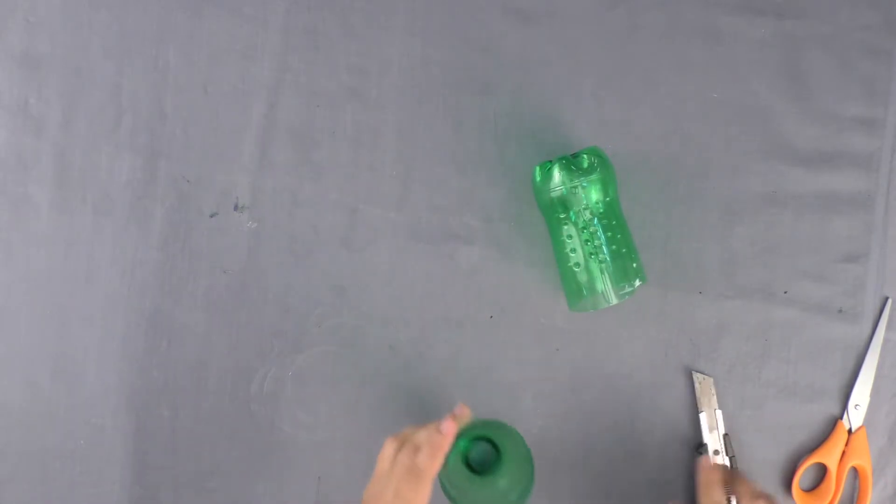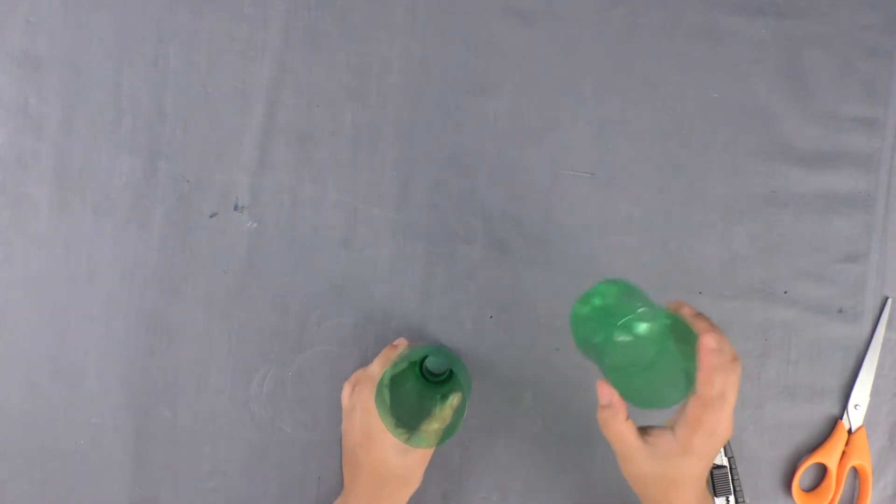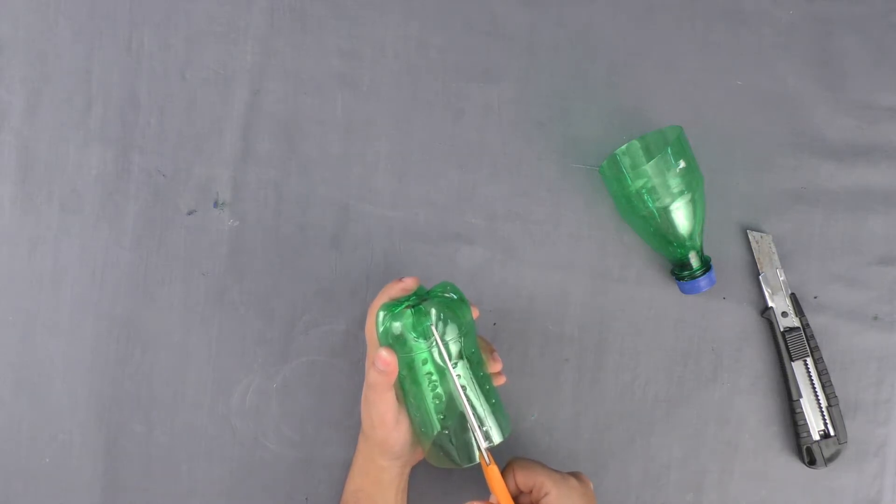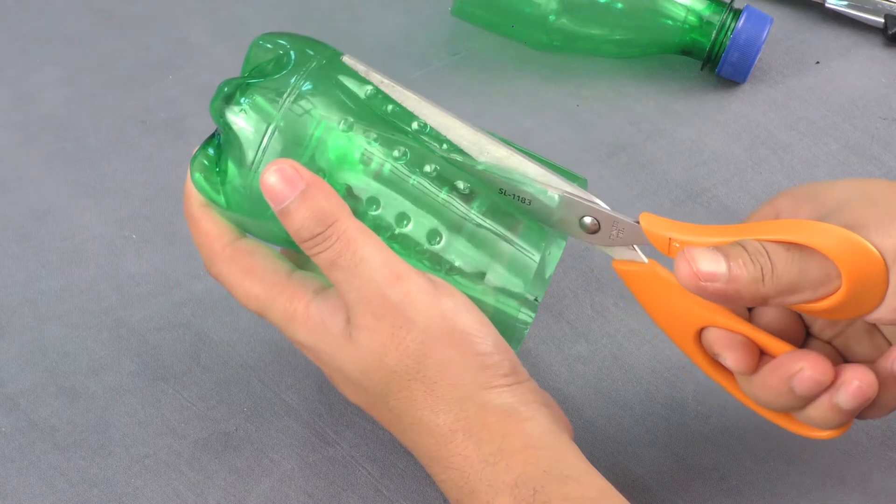Now separate the two bottle halves. Use a scissor to cut the lower half of the bottle, making lengthwise incisions.